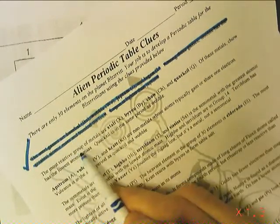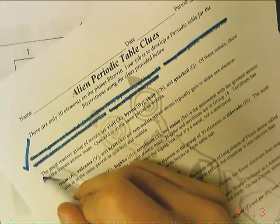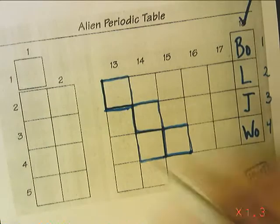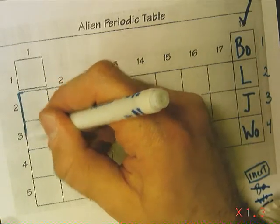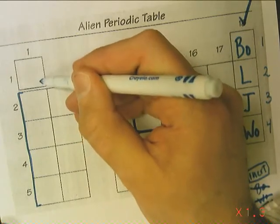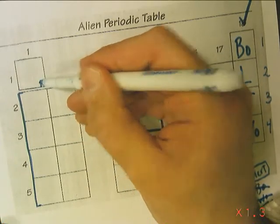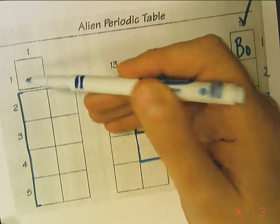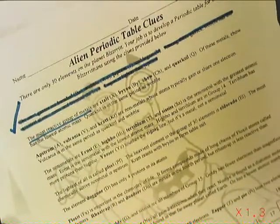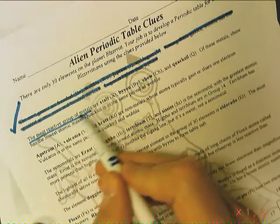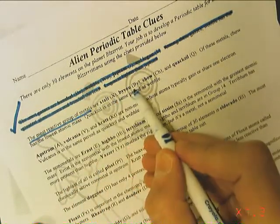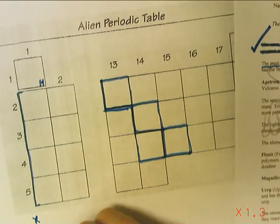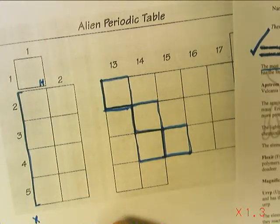The most reactive group of metals... That must be the alkali metals. I know hydrogen is there, and I know that hydrogen is not an alkaline metal. The most reactive group of metals is X, B, Y, C, H, and Q.